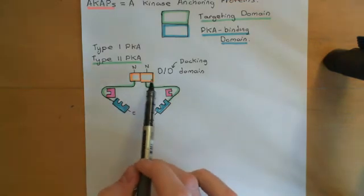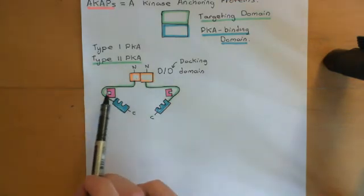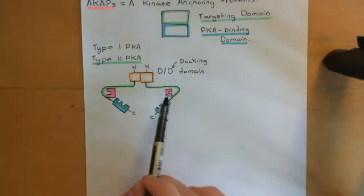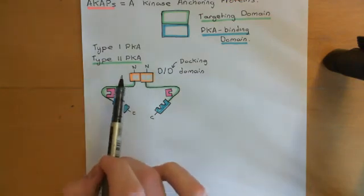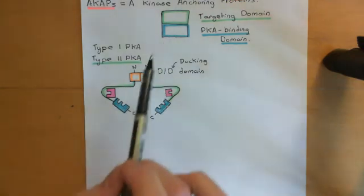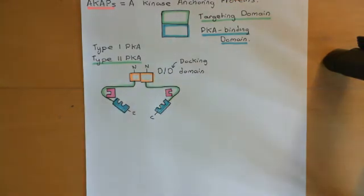The AKAPs bind to the protein kinase A tetramers via the dimerization/docking domains — which is far away from where the conformational changes occur that release the catalytic subunits. So the binding to the AKAP is unaffected by activation of the enzyme; the regulatory subunit dimer will remain bound to the AKAP even when cyclic AMP is bound to its cyclic nucleotide binding domains.